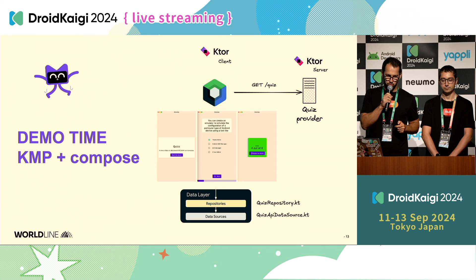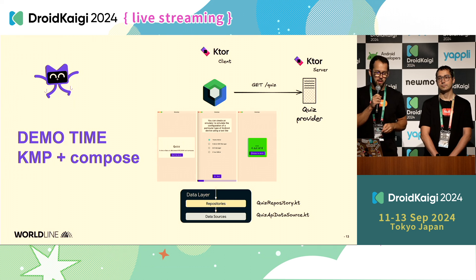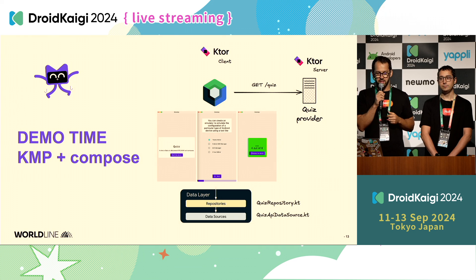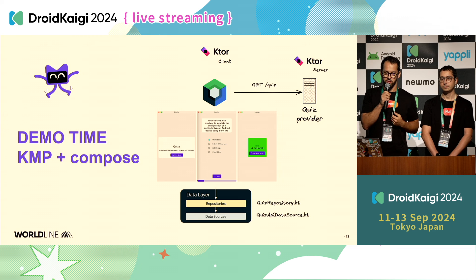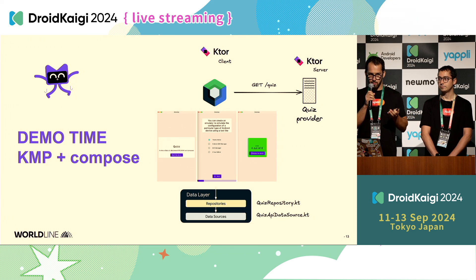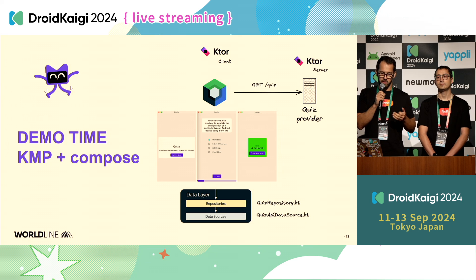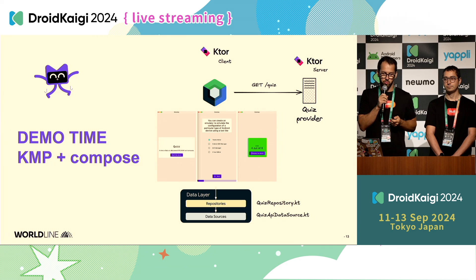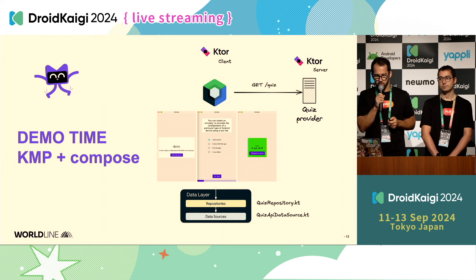Here is a basic quiz application with a welcome screen with a single button to start the quiz, a question screen looping through data fetched from a Ktor server via a GET endpoint, and a final screen showing the quiz score. Behind that, it keeps the Android architecture pattern — a quiz repository handling different data sources, including a mock data source and a quiz API data source that uses Ktor client to retrieve the data.